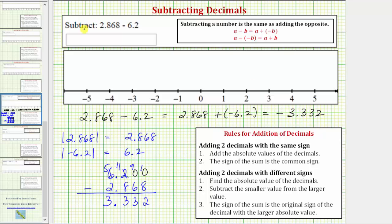So again this is the same as the original difference. And again it should make sense that this is negative because the negative 6.2 is outweighing the positive 2.868 and because we're subtracting a larger value from a smaller value.